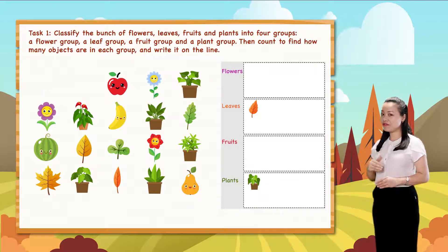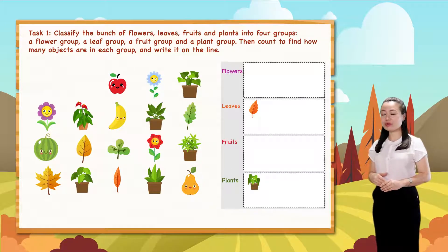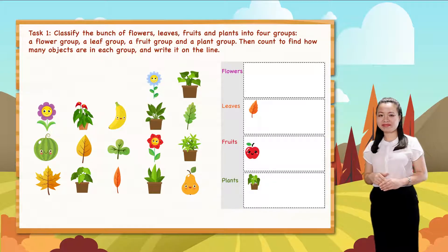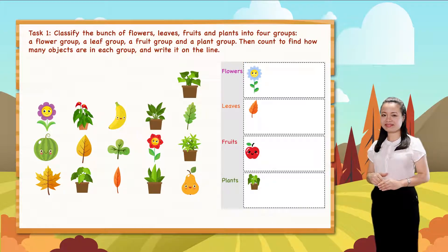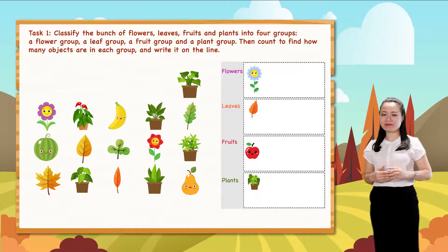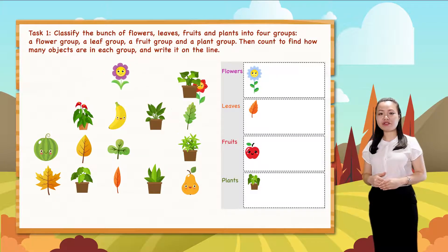This is a leaf. Let's put it into the leaf group. This is a flower. Let's put it into the flower group. So, just put flowers into the flower group.